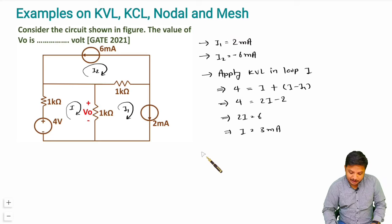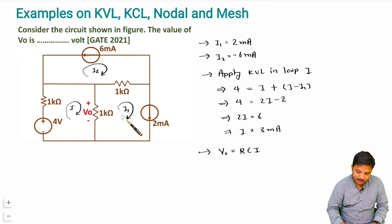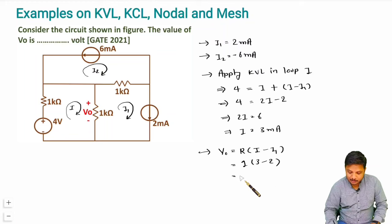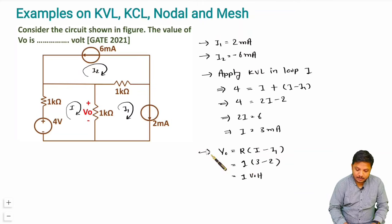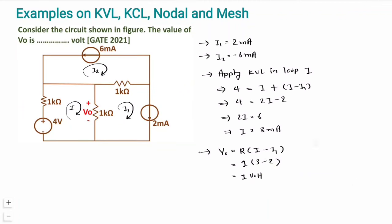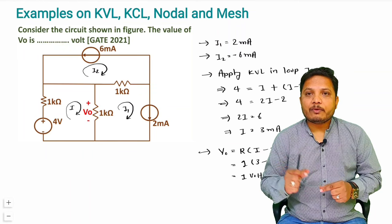Now we can identify V0. V0 equals resistance into current, with the plus-minus polarity noted. I is entering from the plus side and I1 is in the opposite direction, so V0 equals 1k into (I minus I1) equals 1k into (3 minus 2) equals 1. Since resistance is in kilo ohms and current in milliamperes, they cancel, giving V0 equals 1 volt. This is how we can solve an electrical network using KVL.